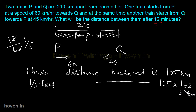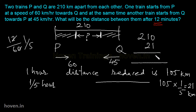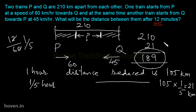So 21 km is reduced in 12 minutes. The remaining distance is 210 minus 21, which gives 189 km. So the distance between the two trains after 12 minutes will be 189 km. Always double-check your totaling.